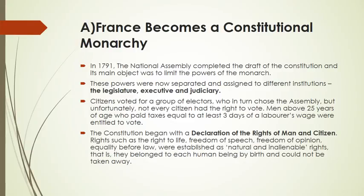Lastly, we find that the constitution began with the Declaration of the Rights of Men and Citizens. This was a document that guaranteed that every citizen of France was equal. People, especially the French people, embraced the document while the kings and the nobles did not. Various rights such as right to life, freedom of speech, freedom of opinion, and equality before laws were established as natural and inalienable rights. This means they belong to each human being by birth and could not be taken away. It was the legal duty of the state to protect citizens' natural rights.